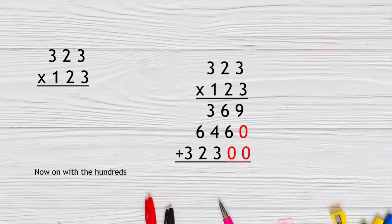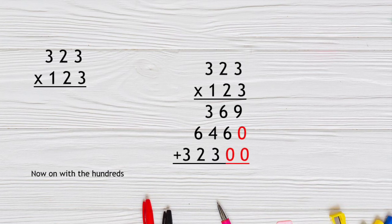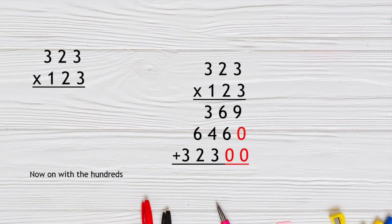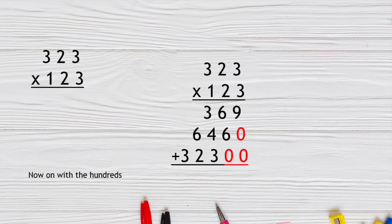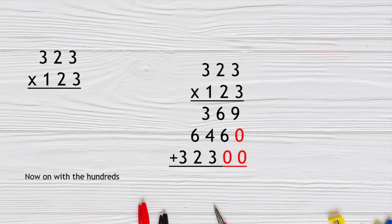All right, we're moving on to the hundreds of 123. So if I take 100 times 3, or three groups of 100, is 300. 100 groups of 200 would be 2,000. 300 groups of 100 would be 30,000.